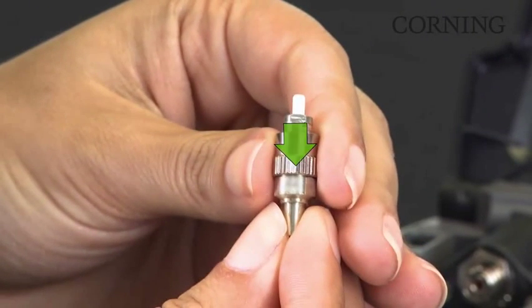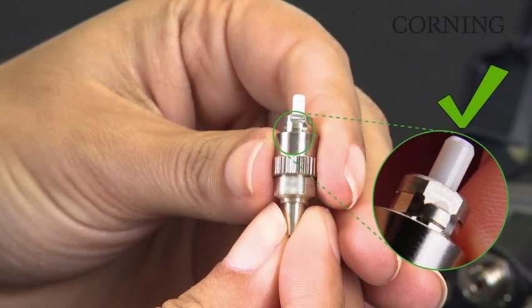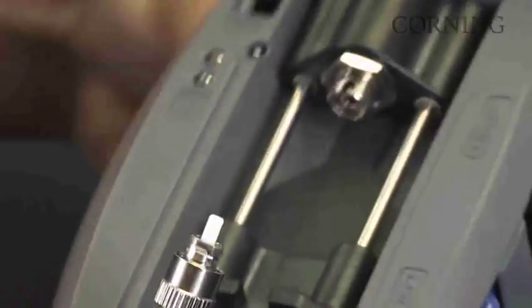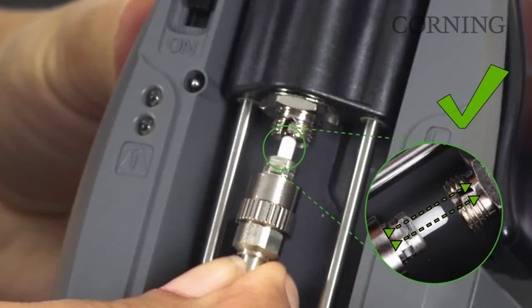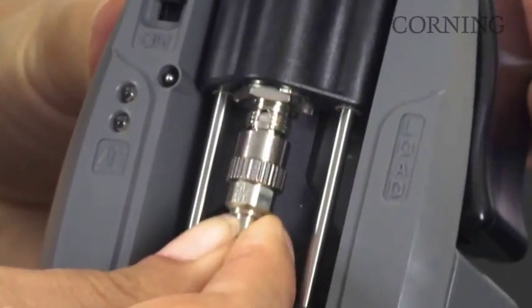Move the ferrule adapter collar away from the tip to expose the key. Reinstall the ferrule adapter, aligning the key on the ferrule adapter to the notch on the VFL coupler port.